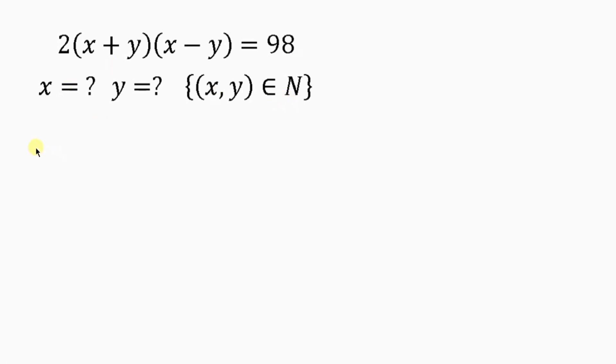So let's see what we have here. 2(x+y)(x-y) = 98. Now we need to get rid of this 2 by dividing both sides by 2. I have to divide the left-hand side by 2 and also divide the right-hand side by 2. You notice this 2 will cancel off this 2. Leaving behind (x+y)(x-y) equal to 98 divided by 2, which gives 49.